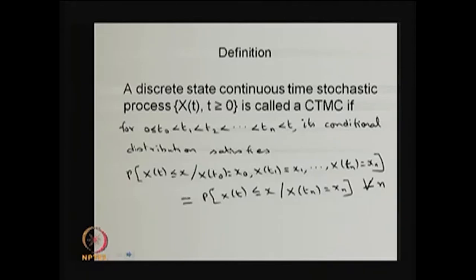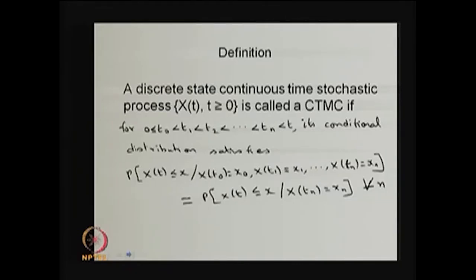If that conditional CDF is the same as the conditional CDF of X(t) given only the last random variable X(tₙ) = xₙ, and if this is satisfied for every n and all arbitrary time points, then that discrete state continuous time stochastic process is called the continuous time Markov chain.